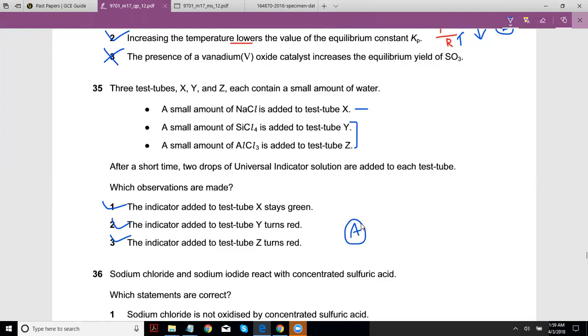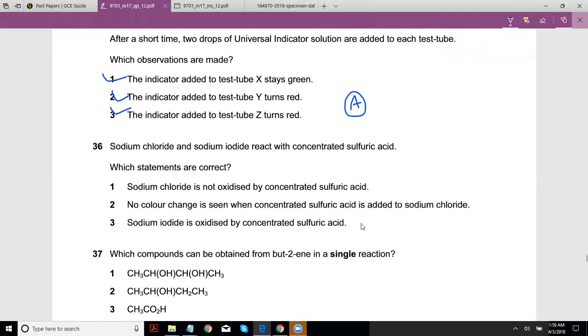So 35 is A. Question 36: sodium chloride and sodium iodide react with concentrated sulfuric acid, basically a strong oxidizing agent. Which statement is correct? Sodium chloride is not oxidized by concentrated sulfuric acid - I think this was clear because the oxidizing ability of halogens decreases down the group because oxidation is the ability to accept electrons, take away electrons.